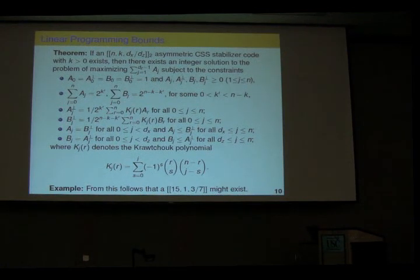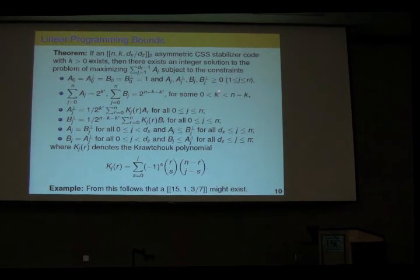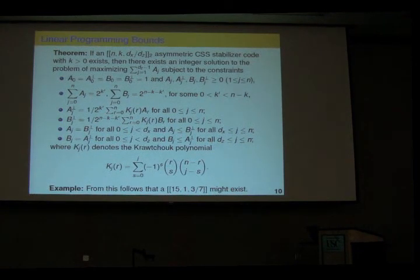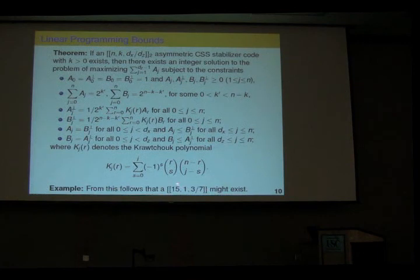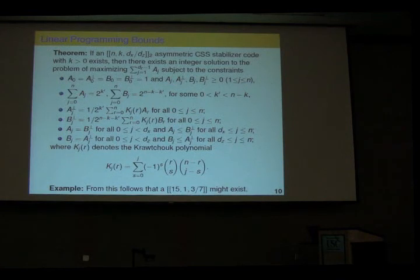The next thing you can do is linear programming bounds, which work exactly like for stabilizer codes. Using the McWilliams identity for weight enumerators, you write down a system of equations and look for solutions — if a solution exists, a code with those parameters might exist. These equations look like the classical linear programming bounds with a twist: a parameter K' tells us where we make the cut between the X and Z parts of the stabilizer. We cycle through all possible values of K' and solve the linear program. From this, for instance, it follows that a [[15,1,3,7]] code might exist — and indeed it does — while a [[15,1,5]] code exists but a [[15,1,7]] code does not.